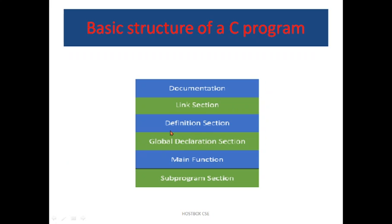Now let's go to the basic structure of C programs — very, very important. If you have a C programming paper in your university exam or degree courses, the question will definitely come from this area. The structure of C consists of six parts: documentation section, link section, definition section, global declaration, and main and subprogram section. The main function is very important — it has two parts: declaration and execution.